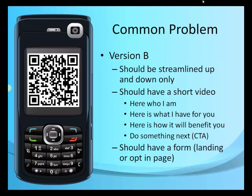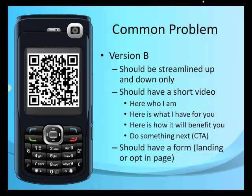Your Version B — the one people scan — should be streamlined, up and down only. I'd recommend a short video. You can search on my blog for how to make a mobile-optimized video. Your short video should cover: here's who I am, here's what I have for you, here's how it's going to benefit you, and here's what I want you to do next — a call to action. You've got to have a form, a landing page, or an opt-in page where somebody can opt in to get more information.